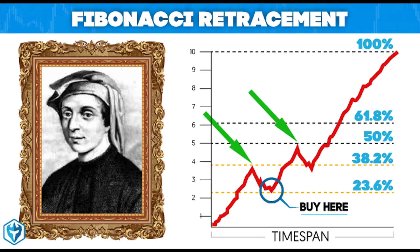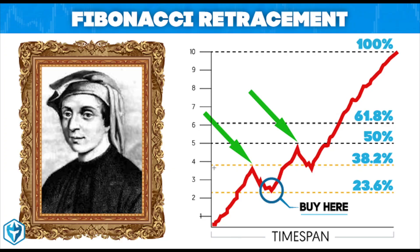Let's get into the video. Back to the screen — these images I have taken from Google and we will give credit in the description. This is the Fibonacci Retracement given by Fibonacci, also known as Leonardo of Pisa, in 1202. He was an Italian mathematician. Now we have to see what it is doing in the stock market and forex market and how we can apply it.